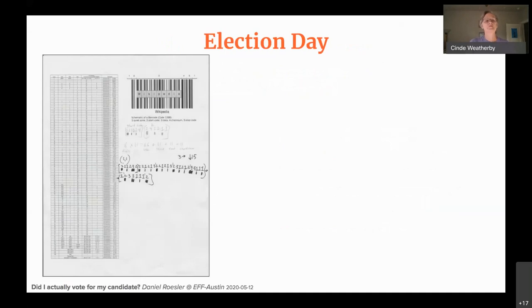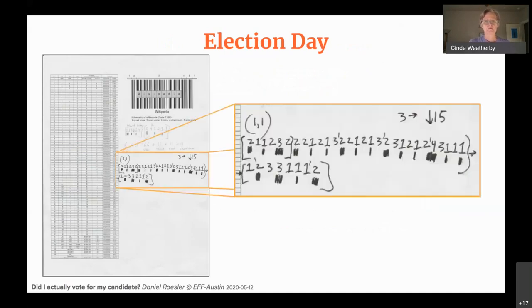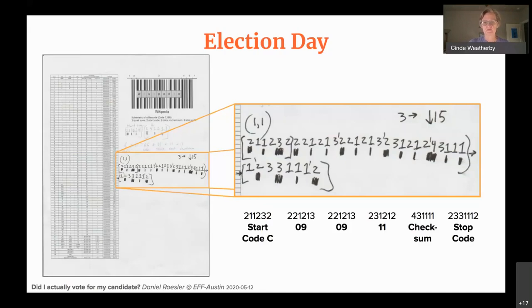Here's the actual cheat sheet I took into the primary. I had the decoding table from Wikipedia plus some reference notations, and then I wrote down one of the barcodes from my printed ballot using the shorthand notation. The numbers add up to 11 per character, with little tick marks as character delimiters. That translates to: start code C, position 9, position 9, page 1, side 1 — then checksum and stop code.